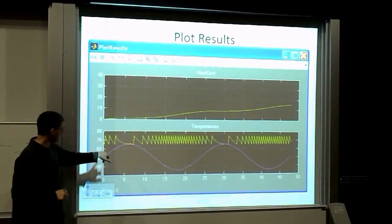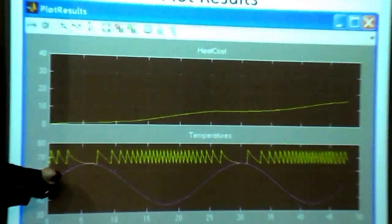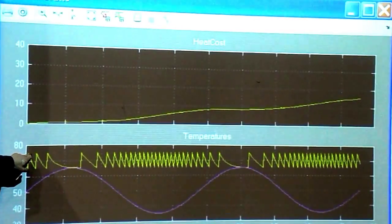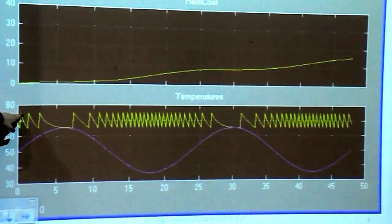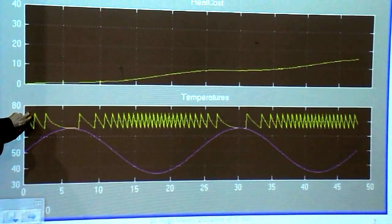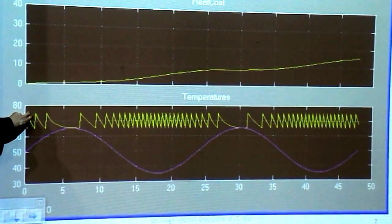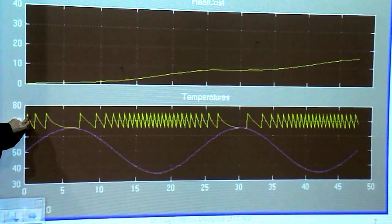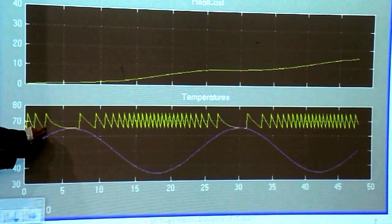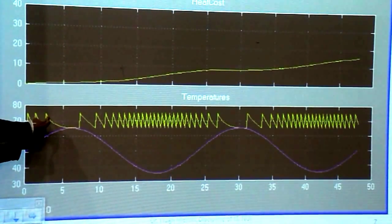Here's the top one, which is the heating cost over the 48 hours. This is the outside temperature varying between 50, baseline of 50, varying between 65 and 35. This is the house temperature. We have an initial point that we set. The temperature falls, the heater cuts in.